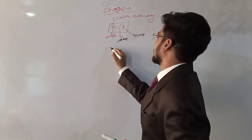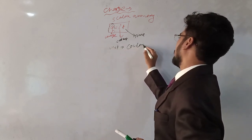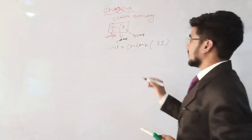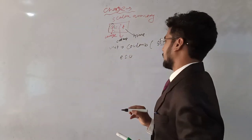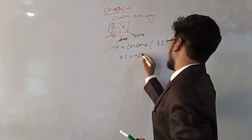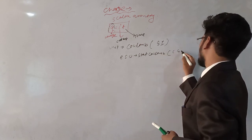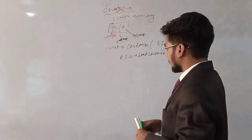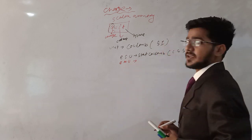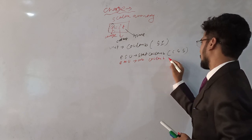The unit of charge is the coulomb, in the SI system. Another unit of charge is ESU, that is electrostatic unit, also called stat coulomb, used in the CGS system. Another unit is EMU, the electromagnetic unit, also called the ab-coulomb, also in the CGS system.